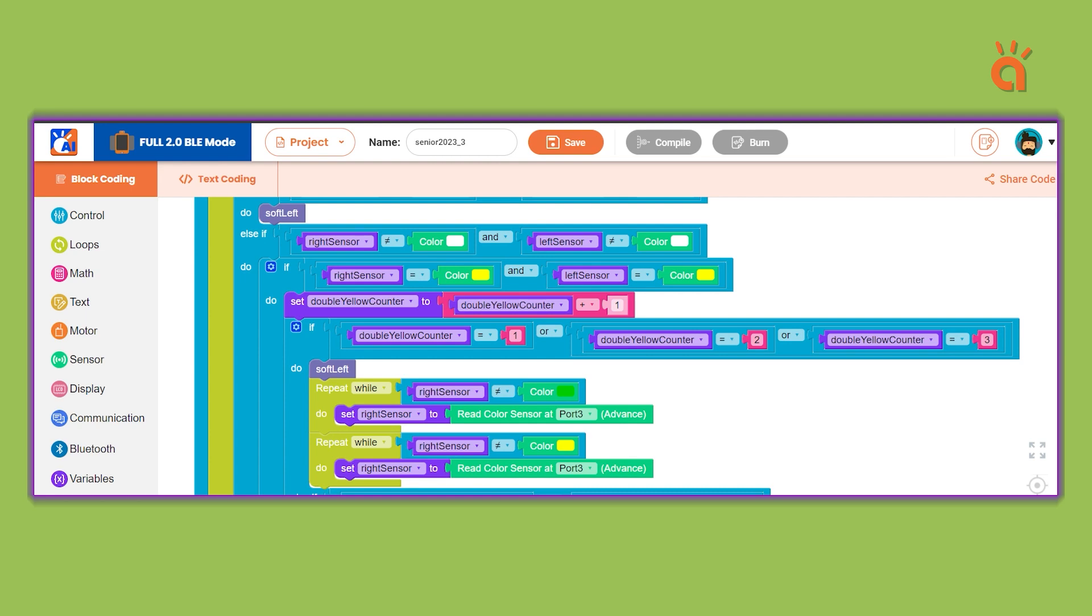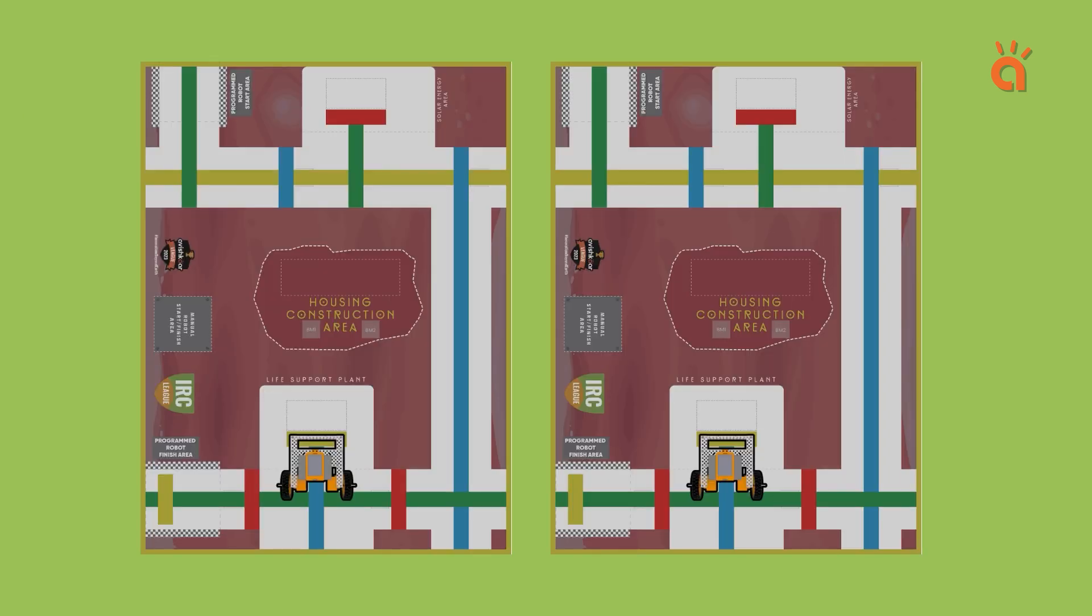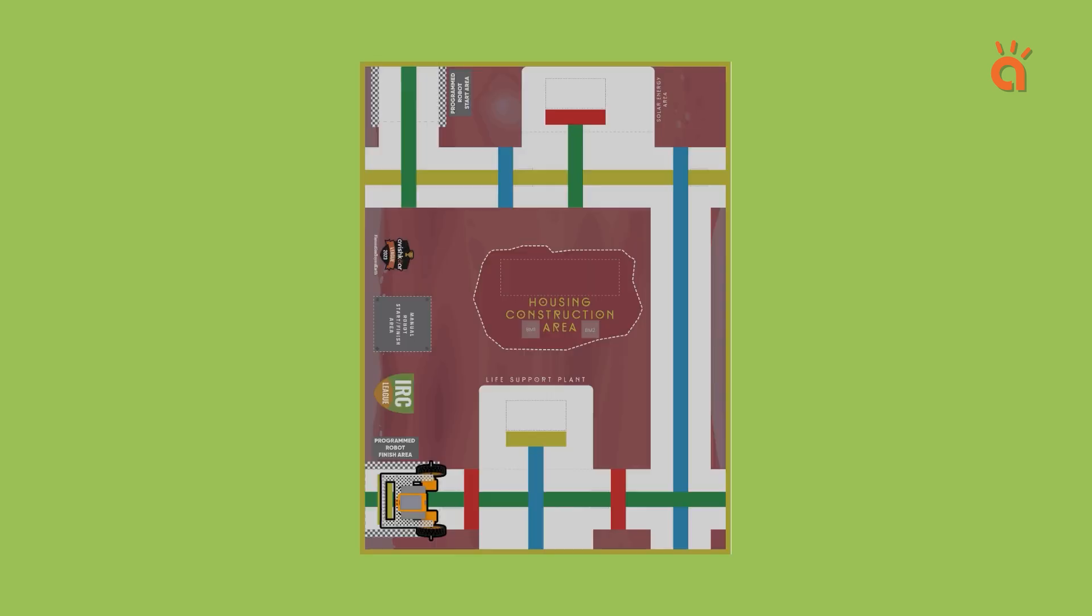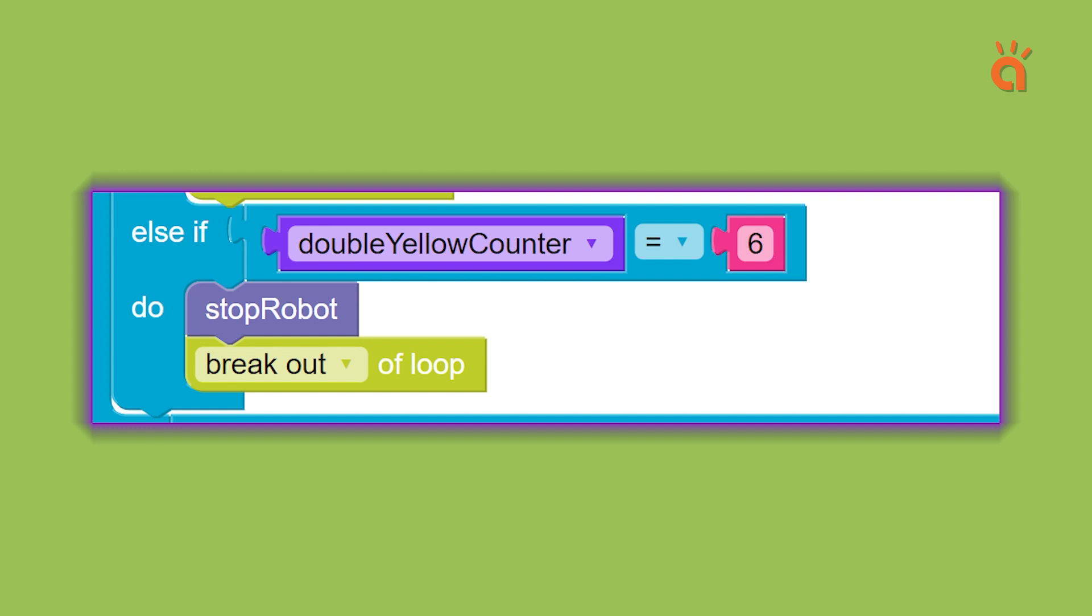Next on intersection number 4 and 5, the robot will place the prop. So we will add stop and hard right turn to make it rotate 180 degrees. Lastly, on the sixth intersection, the robot will completely stop and break out of the loop.